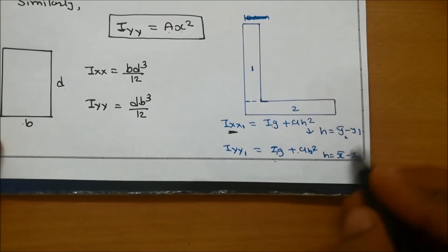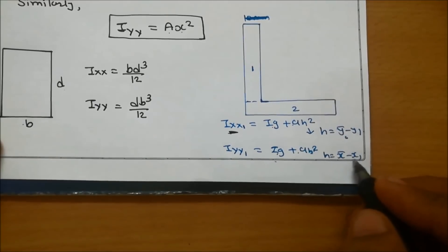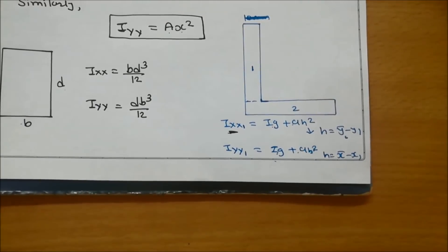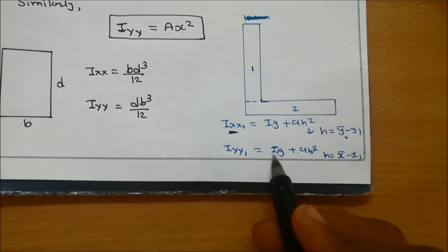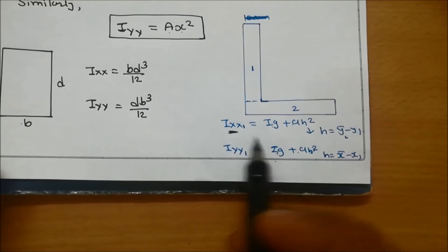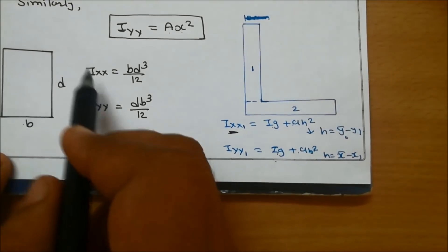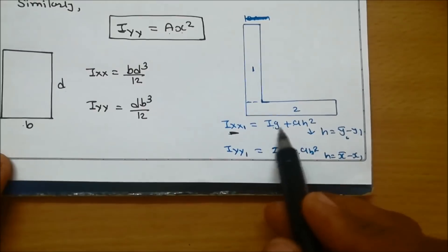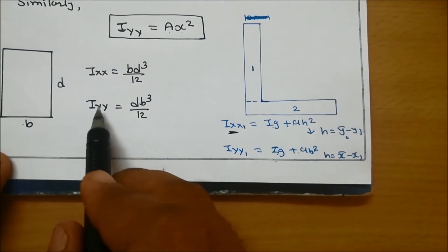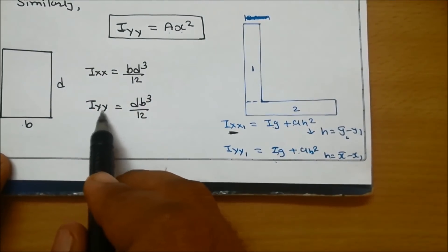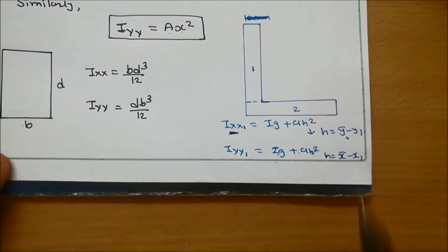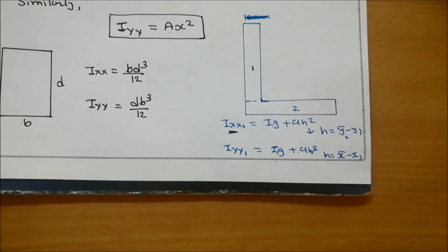For Iyy of each part, Iyy equals Ig plus Ah square, where H equals X-bar minus X2 for the second part. Instead of Ig we write the rectangle formula: bd cubed by 12 for Ixx and db cubed by 12 for Iyy.